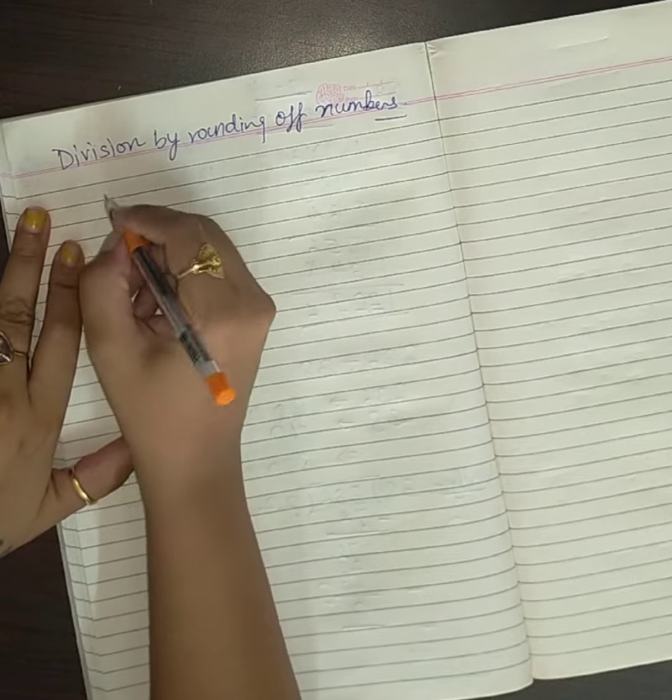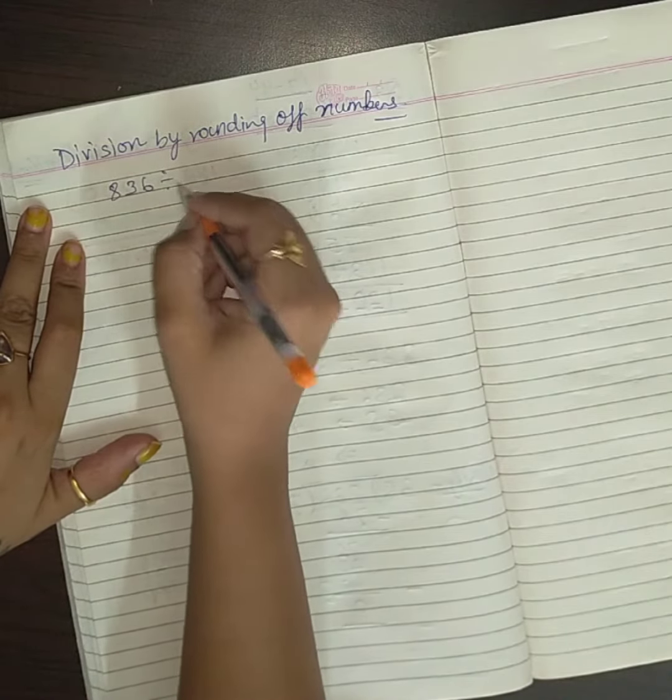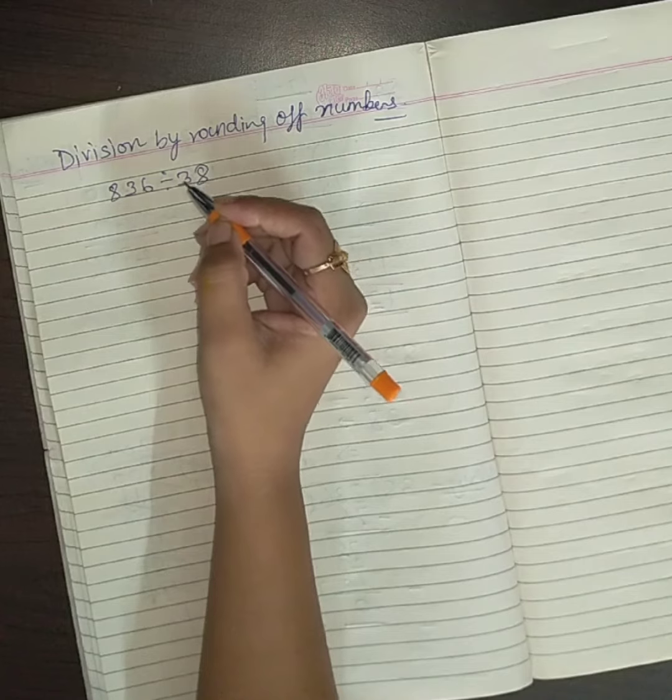Let's do it. What's the value? 836 divided by 38, okay?